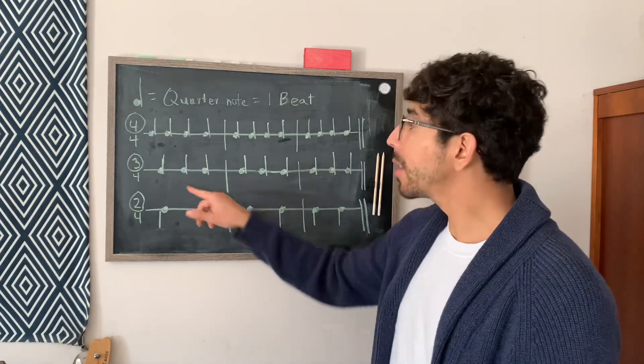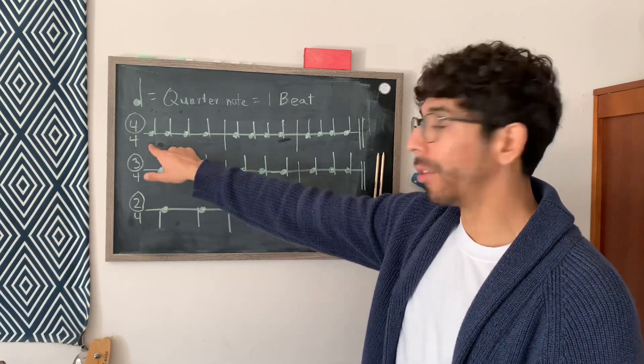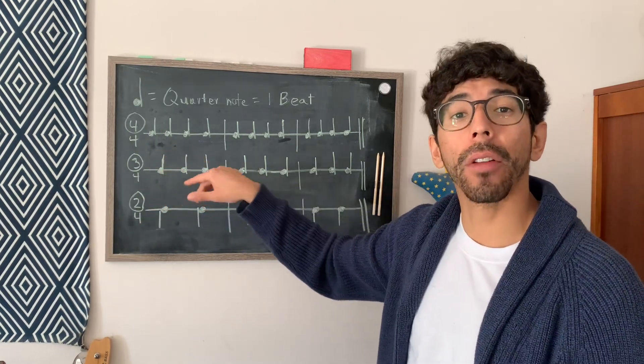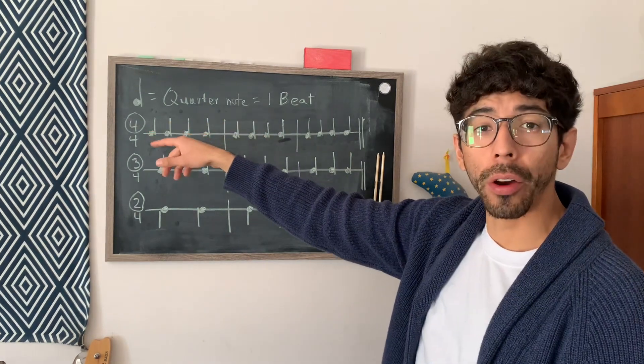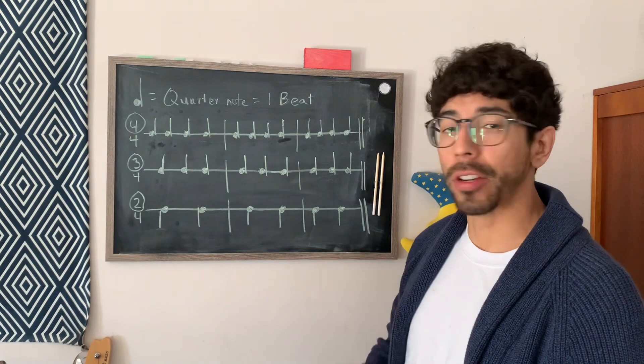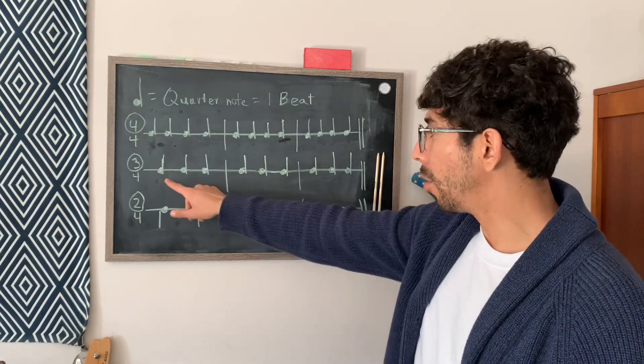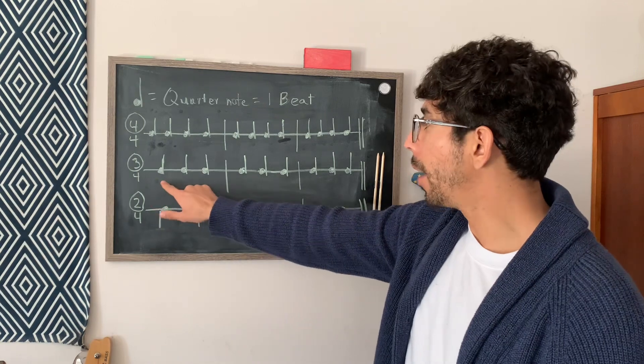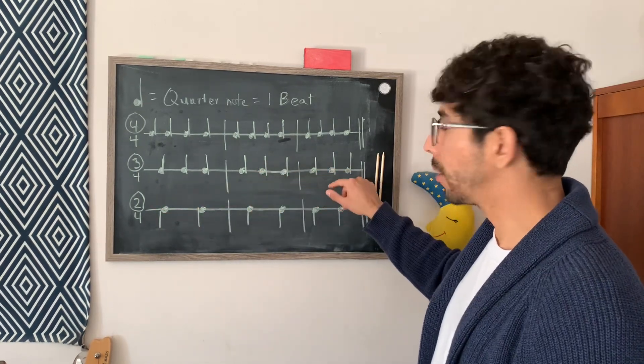Now, if we change that top number to say 3-4, now each measure is only going to have three beats. And in this case, one beat equals one quarter note, we're only going to have three quarter notes per measure. So we would count this in threes instead of fours. So to start, we go 1, 2, 3, 1, 2, 3, 1, 2, 3.